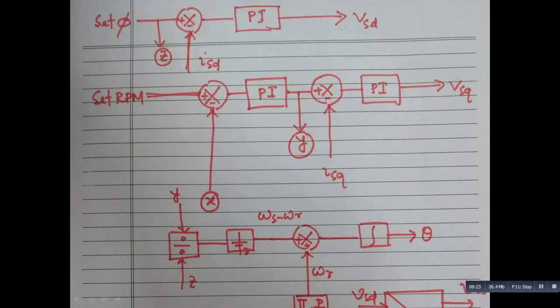Now, for setting the flux, I am basically setting the direct axis current, stator direct axis current. So it is compared with this block. Then this is a regulator. It is a PI regulator, which is generating the stator direct axis voltage.